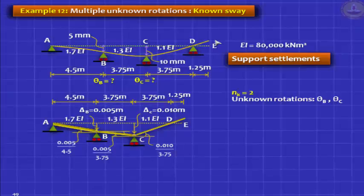Two unknowns: theta B and theta C. Fixed end moments - nothing to write. Chord rotation, you have to write carefully. So write the 4.5 meter.